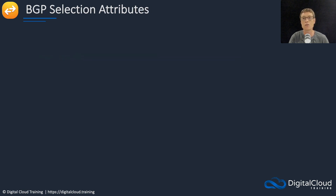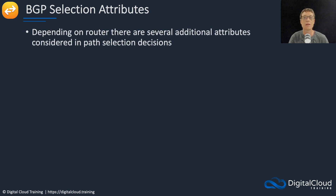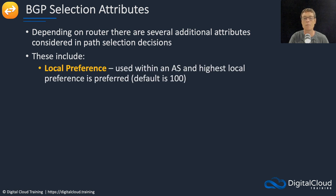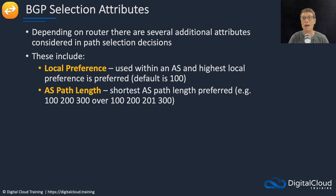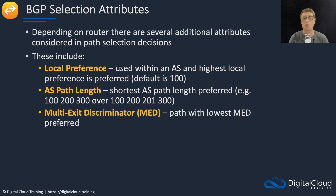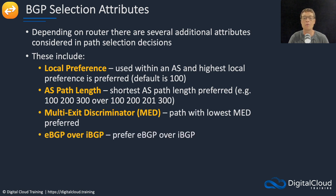There are several other selection attributes BGP uses when determining the path to take, and these vary depending on the router. Choosing those most likely to come up on the exam: Local Preference is used within an AS, and the highest local preference is preferred — the default is 100. Then there's AS path length, where the shortest AS path length is preferred; for example, '100 200 300' is shorter than '100 200 201 300'. Next is the Multi-Exit Discriminator, or MED, where the path with the lowest MED is preferred. Finally, eBGP is preferred over iBGP.